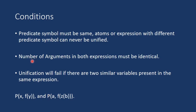Now the second condition is number of arguments in both expressions must be identical. That means suppose in this expression there are two arguments, one and two. And here also two arguments are present, one and two, so unification is possible. But suppose in the second expression three arguments are given or not two arguments, then we cannot unify this type of expressions.